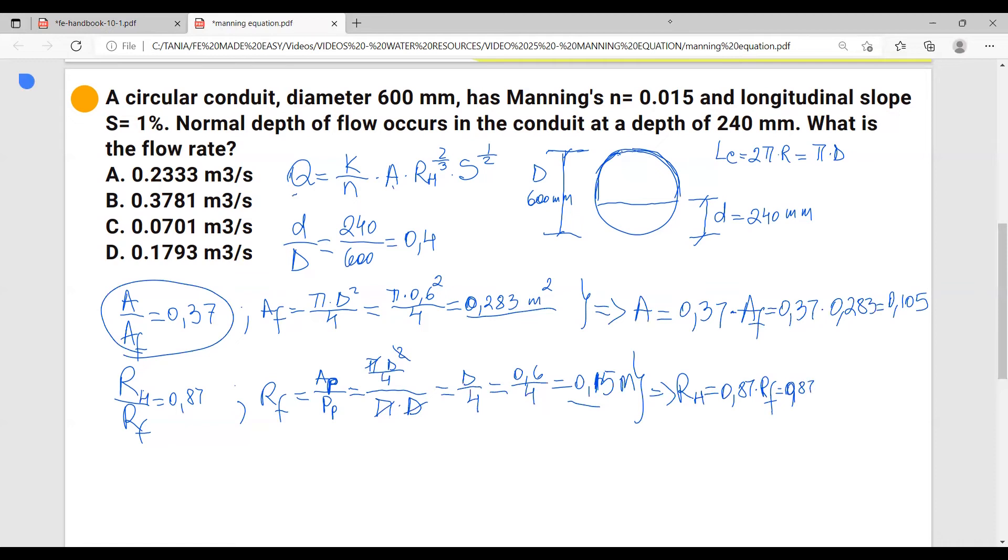And that is 0.15. So we get 0.87, 0.15 multiplied, we get 0.1305. So now knowing these parameters we can go back and apply them into Manning's equation.